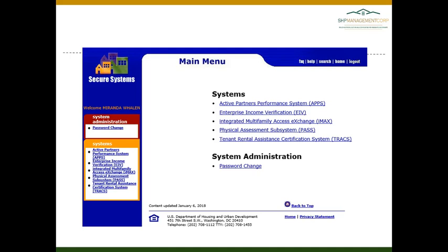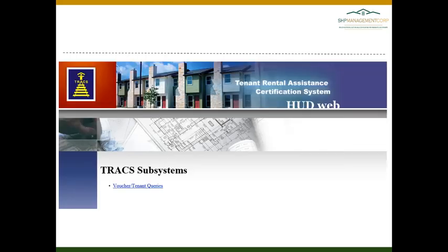TRACS is one of the subsystems in Secure Systems. When you sign into Secure Systems, you should see TRACS listed as one of your systems if you are given access. If you require access, please contact the main office and we can assist with getting you set up. To access TRACS, you will click on the link that says Tenant Rental Assistance Certification System, or TRACS, and it will bring you to this page with a single link.